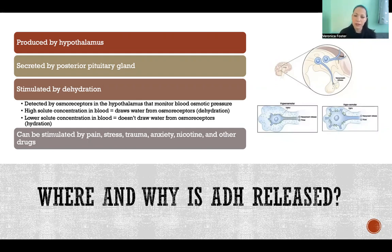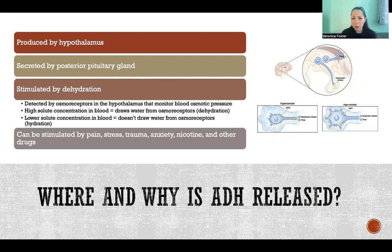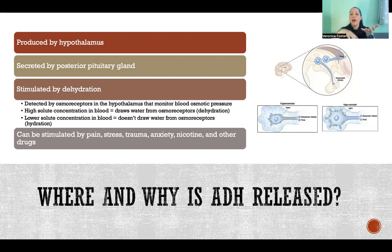ADH secretion is stimulated primarily by dehydration — that is the main trigger. There are osmoreceptors, which are sensory receptors in the hypothalamus that monitor your blood osmotic pressure. Essentially, they detect how much draw there is from the blood on those cells, trying to pull water out of the cell. Osmotic pressure is generated when there's an imbalance in the concentration of solutes on two sides of a membrane separating them — in this case, the blood and the fluid inside the osmoreceptors.